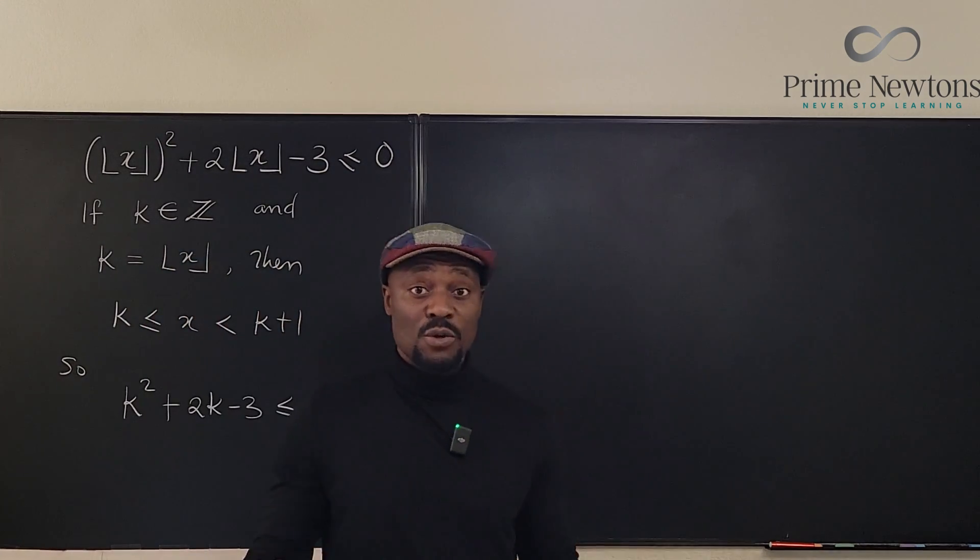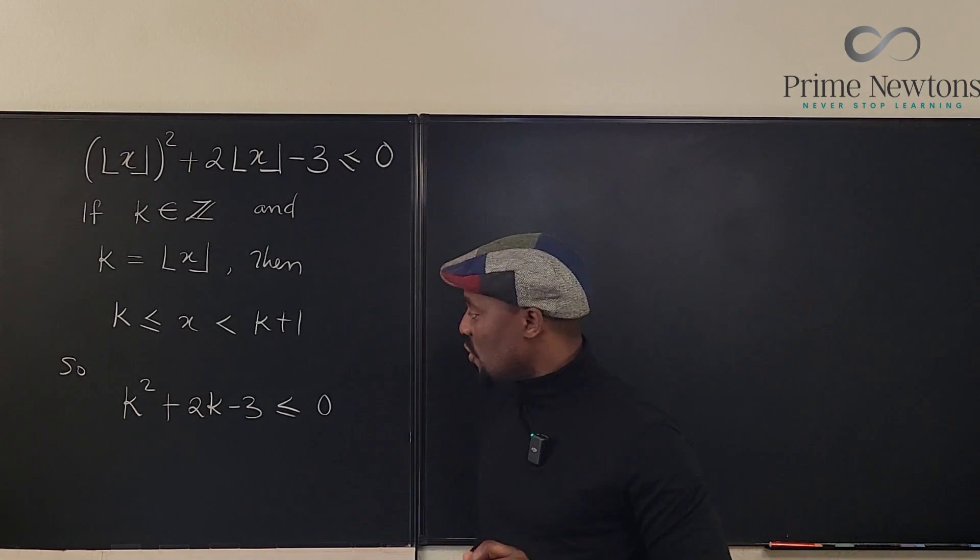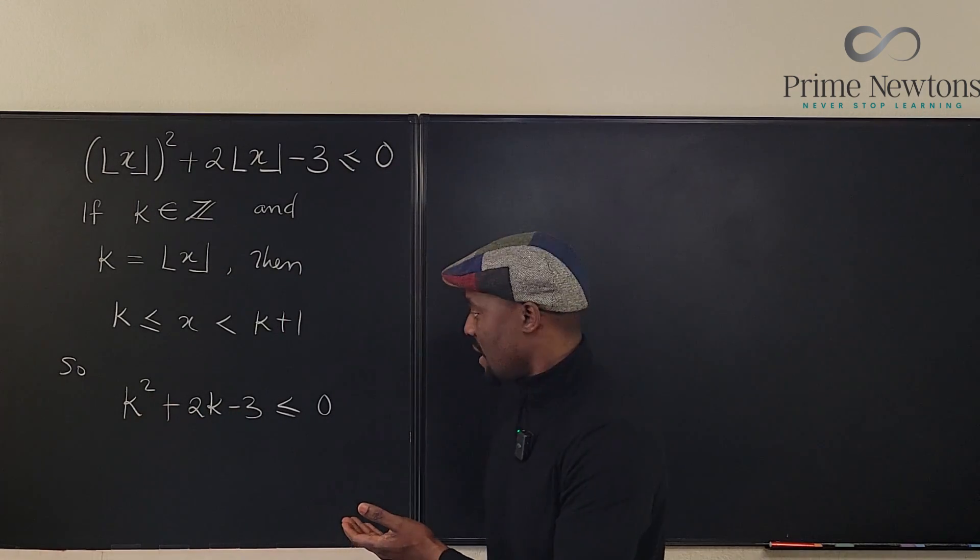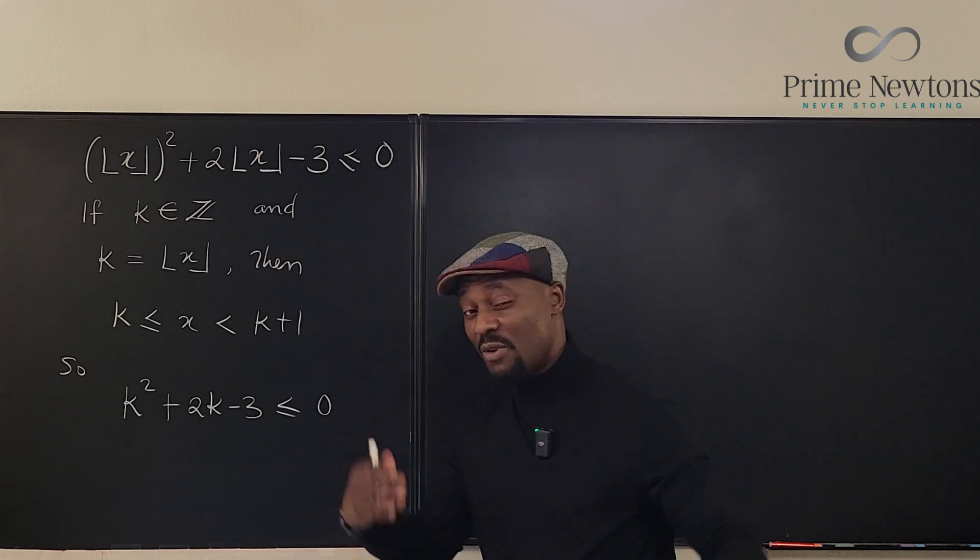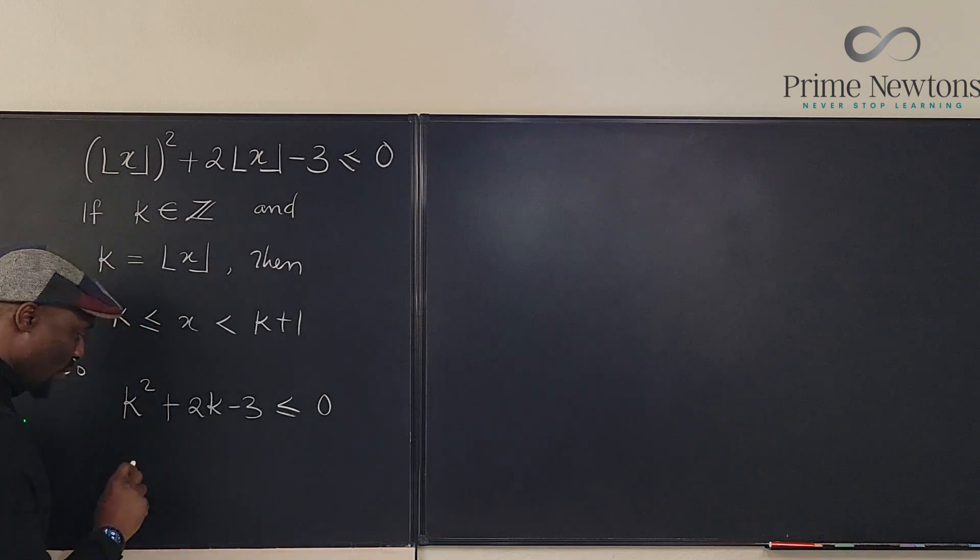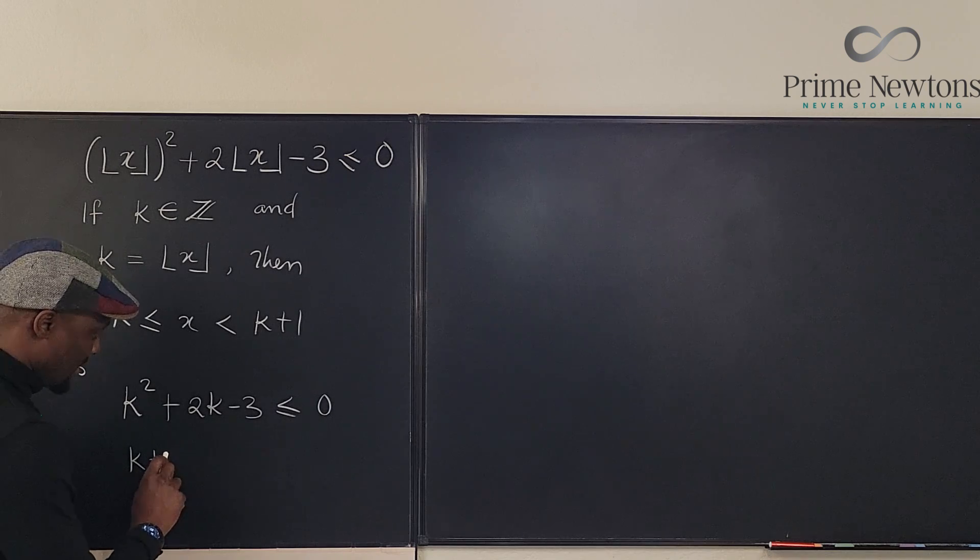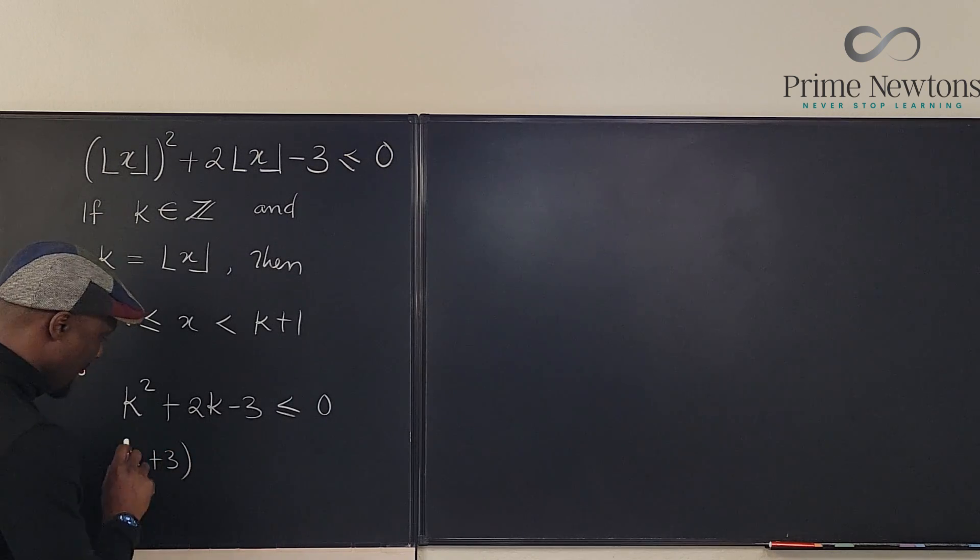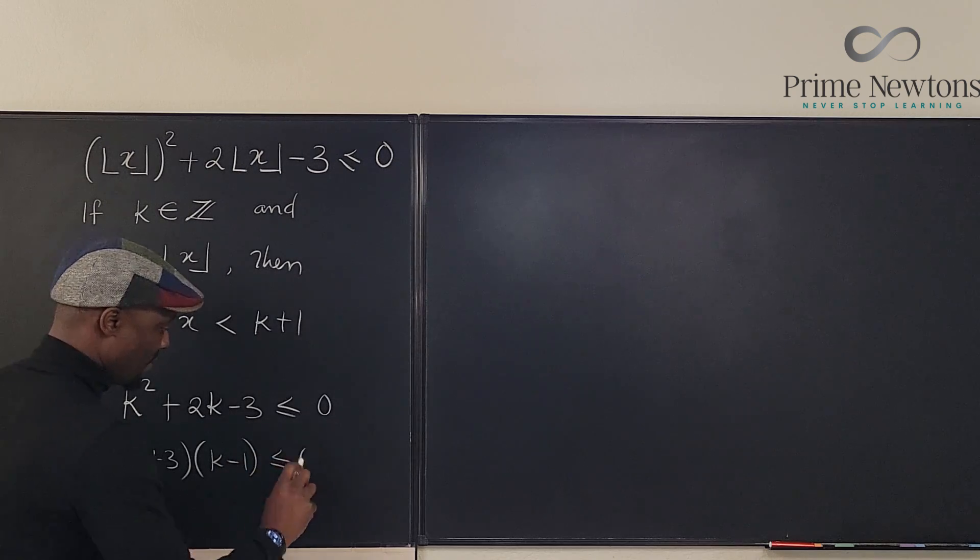And you know that when you solve a quadratic equation that has a less than inequality, you can just solve the quadratic and your answer is going to be between the two values. I already talked about that in previous videos. So if we solve this quadratic, if we factor this we'll have K plus 3 times K minus 1 is less than or equal to zero.